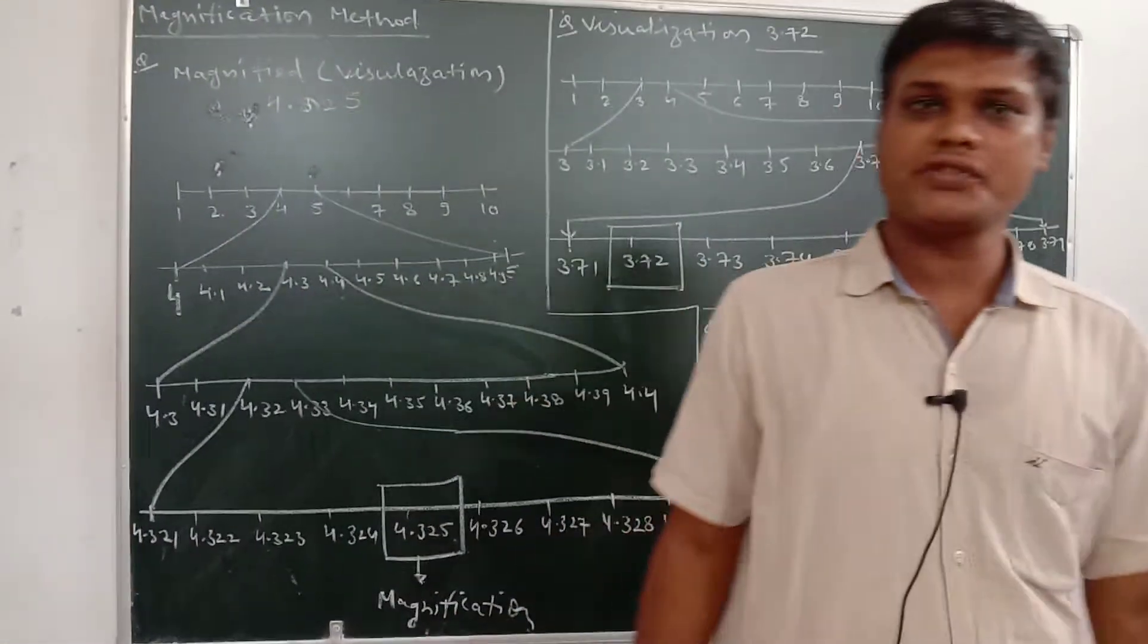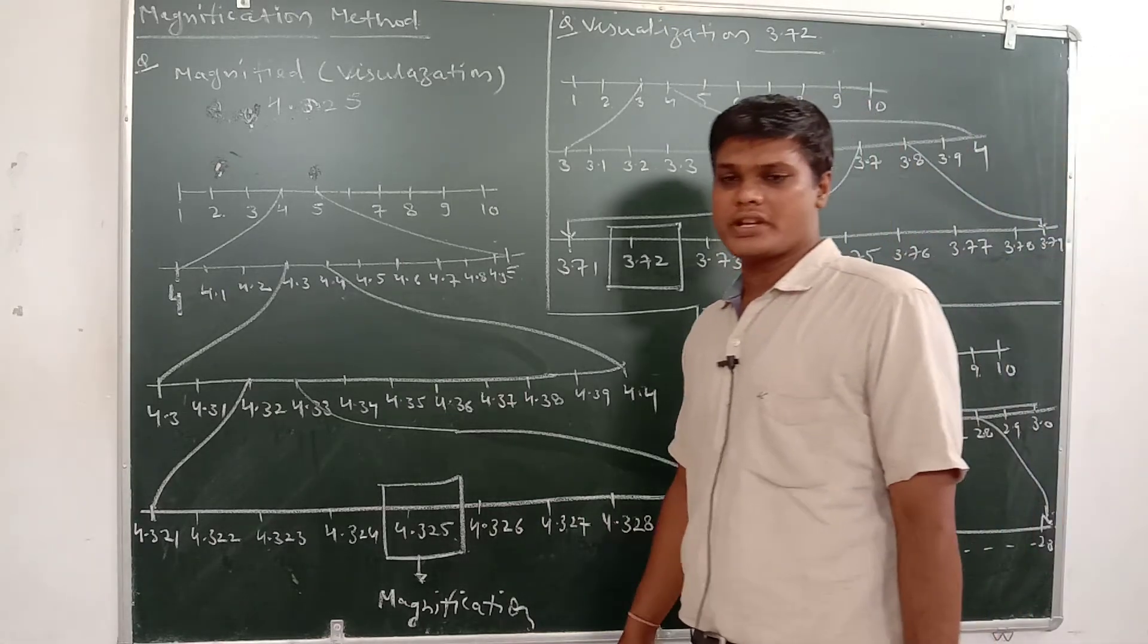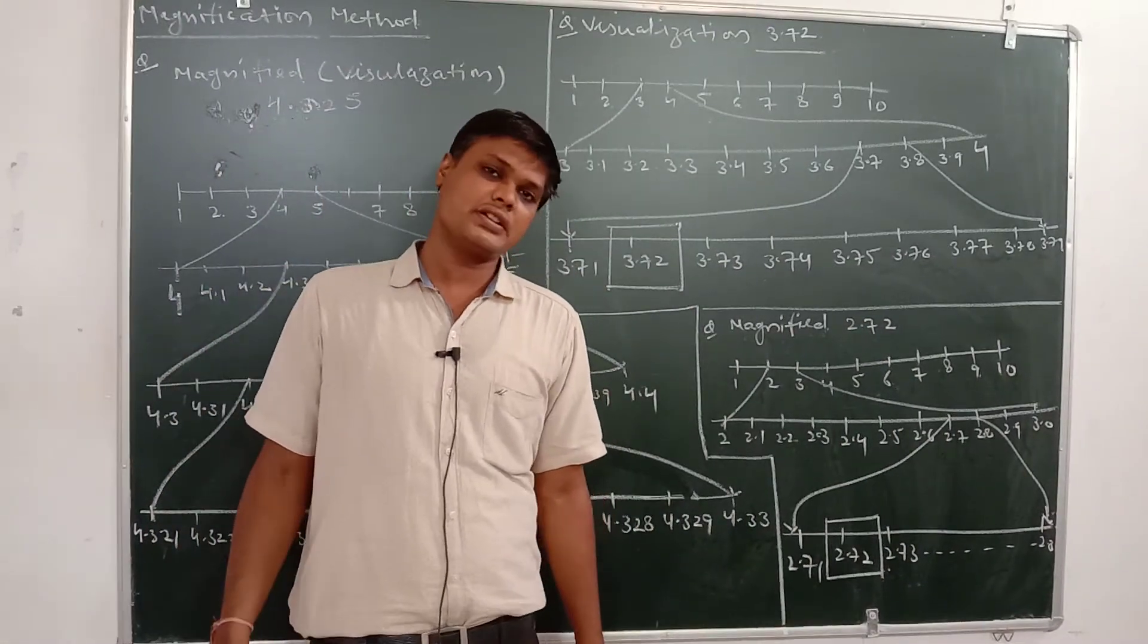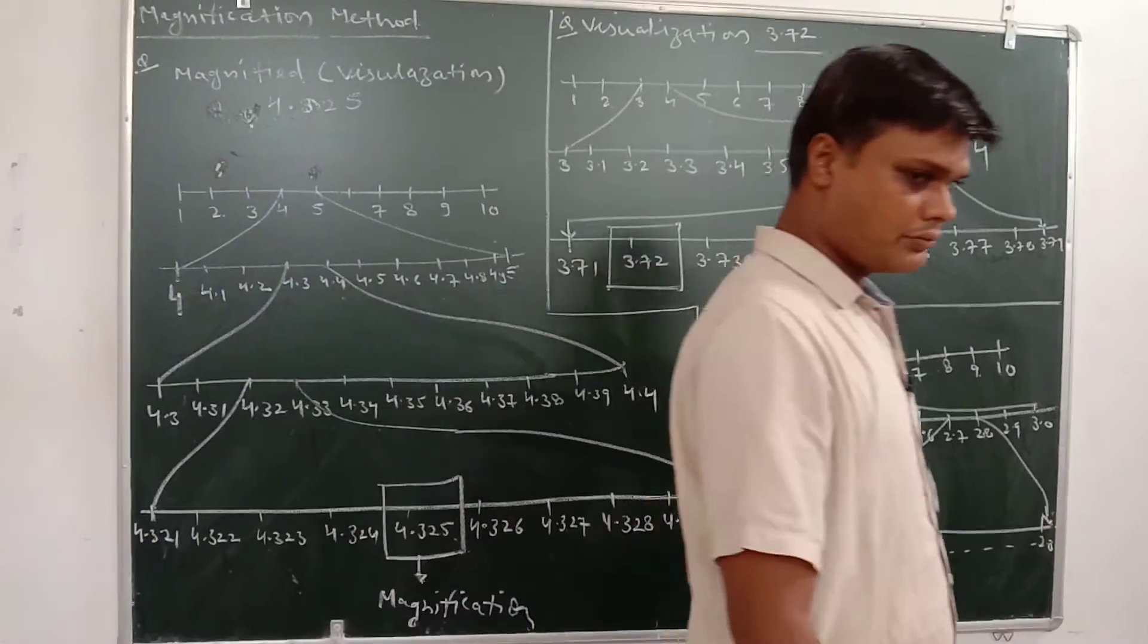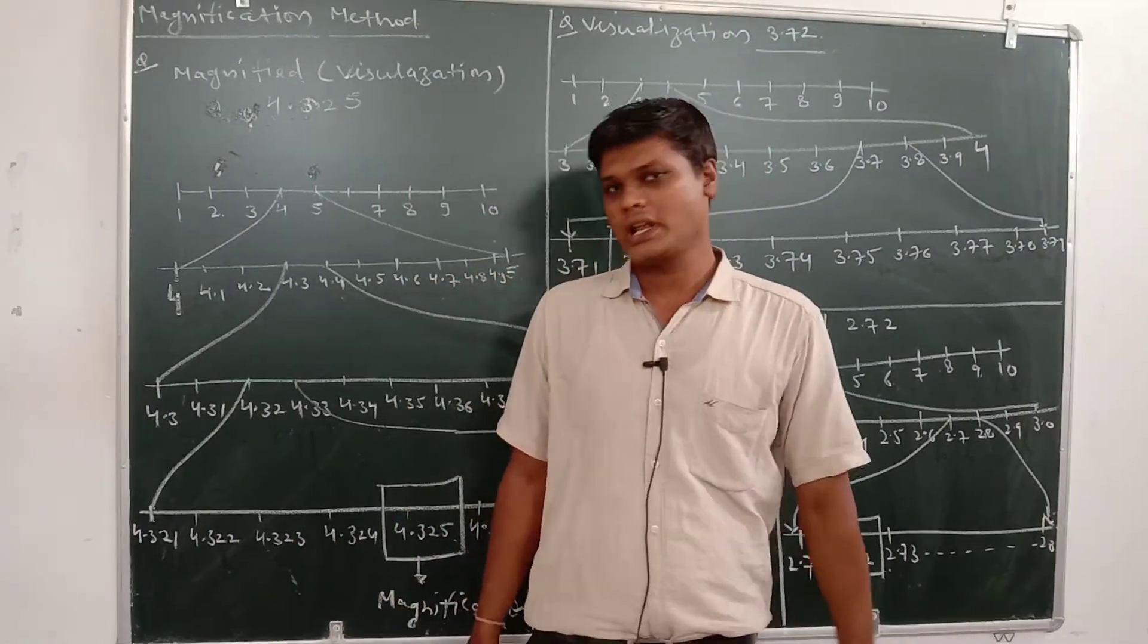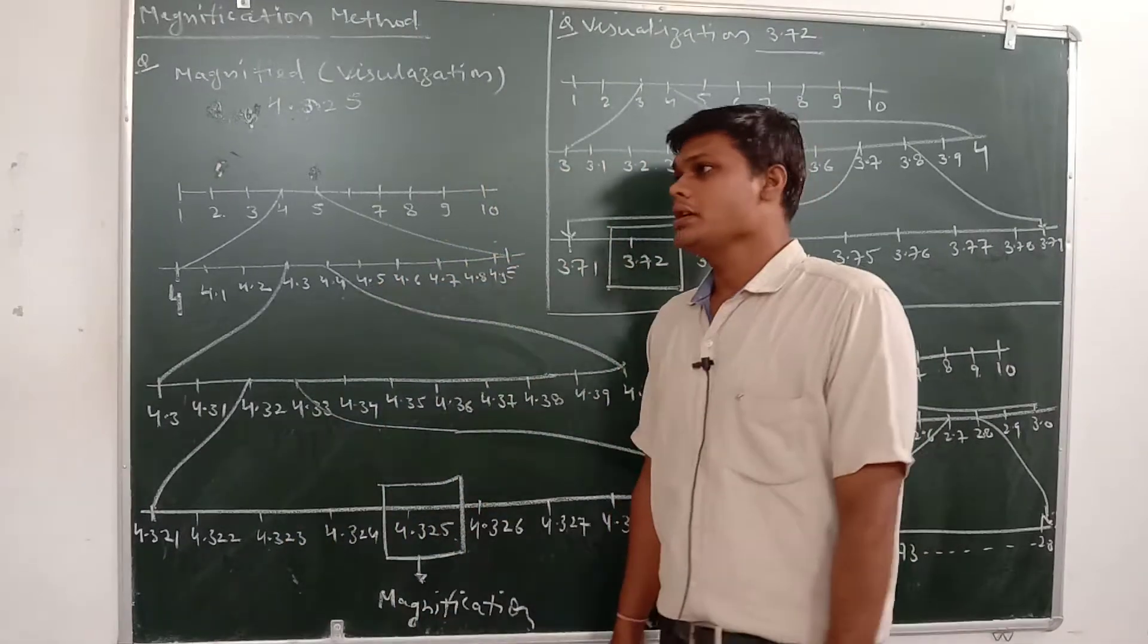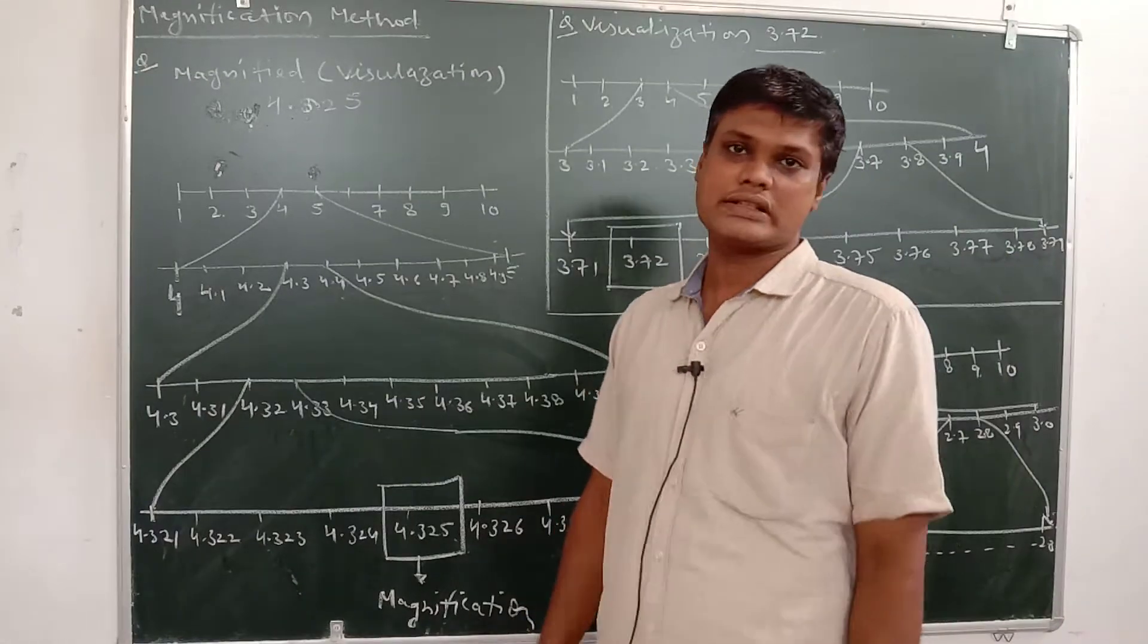Good morning to all students, welcome to Parshv International School. Today we discuss the magnification method. In the last class we discussed rational numbers, converting decimal to p by q and p by q to decimal. Today we discuss the magnification method - magnification means to magnify, meaning if you have any given number, you magnify it to see it in detail.